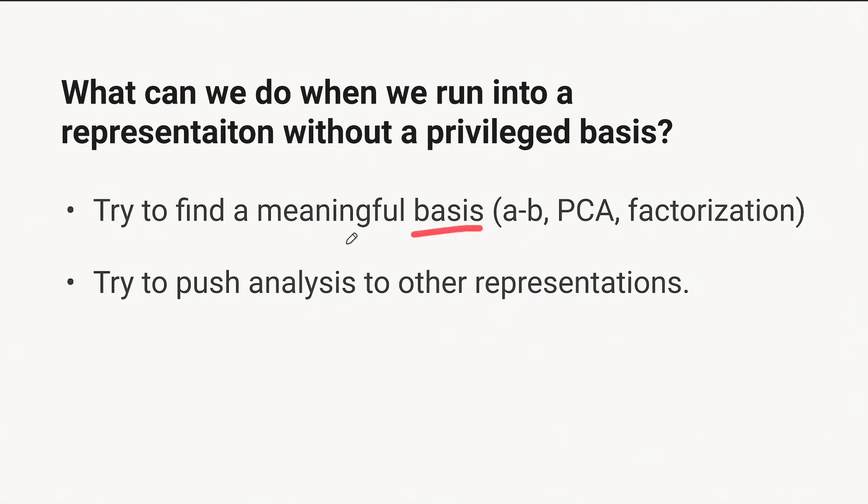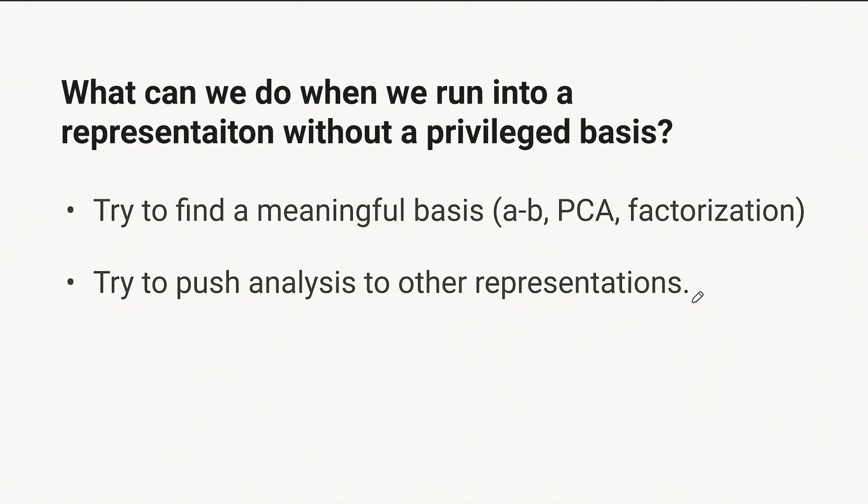That's my rant on trying to find a meaningful basis. For the option of pushing analysis to other representations: in transformers, we're very fortunate that all of these representations that don't have a privileged basis are just linear transformations of a bunch of privileged bases. So the alternative is to talk about everything in terms of privileged bases like your MLPs and your tokens, and just push all the math back to those. If you've watched our videos so far, you've probably seen examples of this implicitly — where we were able to understand attention heads by pushing the OV circuits and QK circuits all the way back to the tokens. This is a very promising strategy.